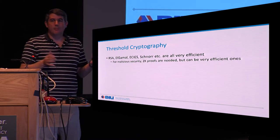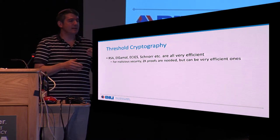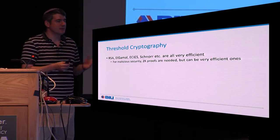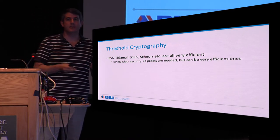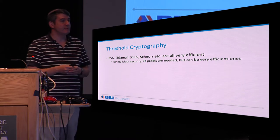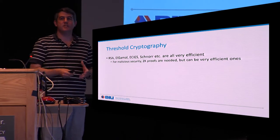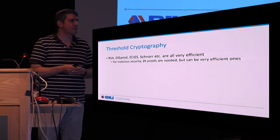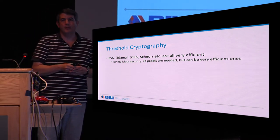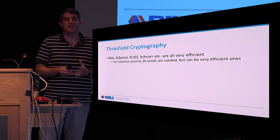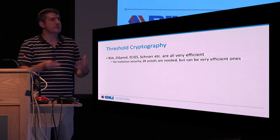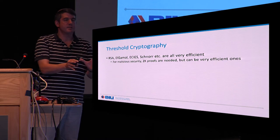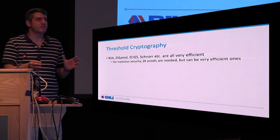We know from a couple of decades ago that RSA, El Gamal, ECIES — which is just Diffie-Hellman — Schnorr signatures: all of these can be done very efficiently even with malicious adversaries who run any arbitrary attack strategy to try and break the protocol. We can protect against that using very efficient zero-knowledge proofs inside these protocols, and this is really a solved problem.